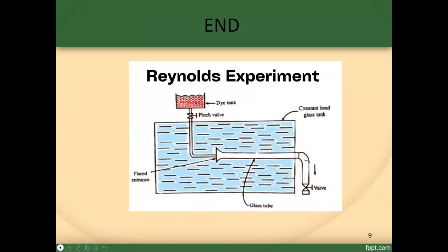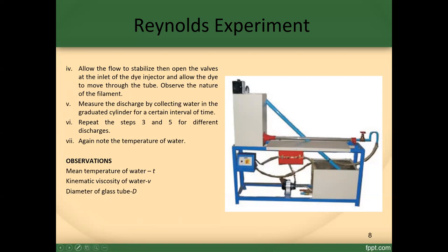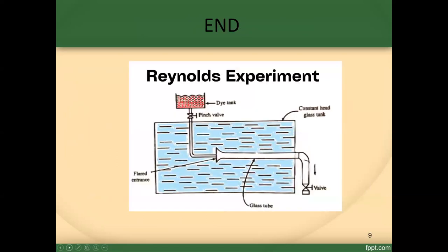That will be your output. From the collected data you can compute the velocity of flow and then the Reynolds number. The dye enters at this point, and through the gate valve you can observe the flow regime directly.